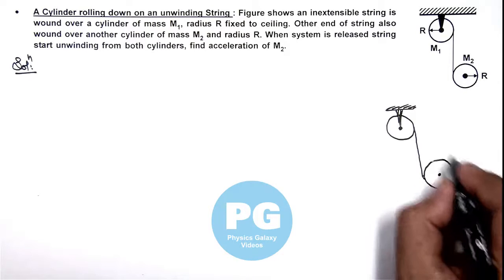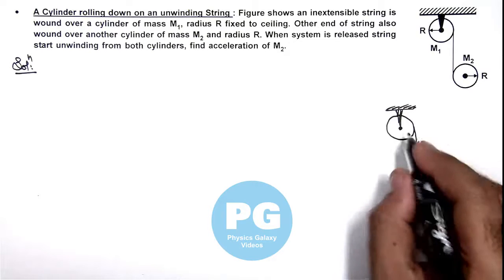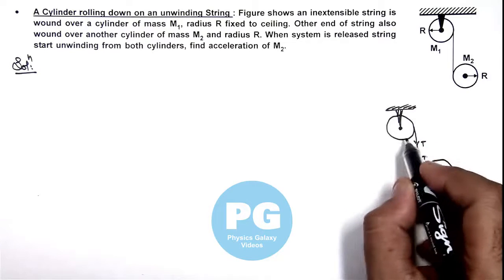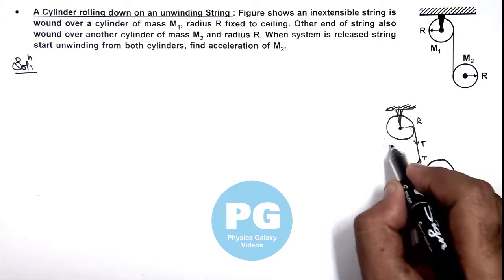The force acting on the upper cylinder due to which it starts rotating is the tension. Its radius is R and its mass is m1.